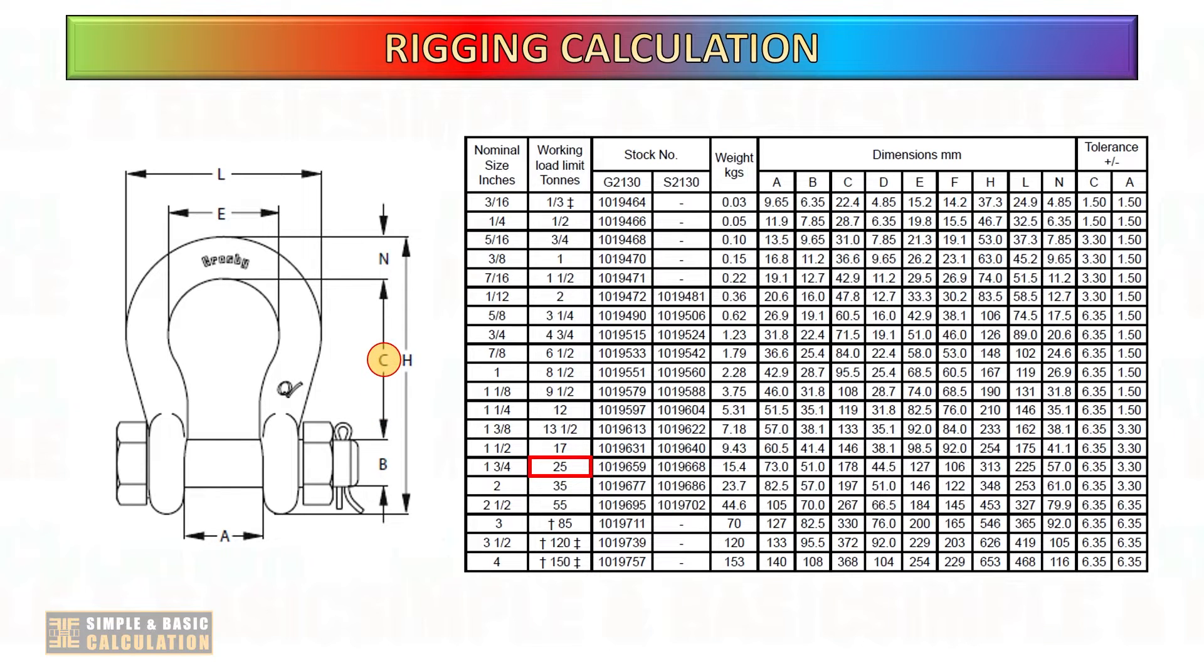it is necessary to utilize a process of trial and error in order to achieve a balanced length of rigging, particularly when the center of gravity is not aligned with the center.